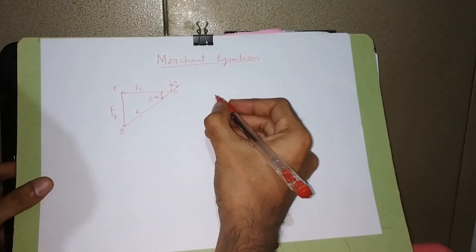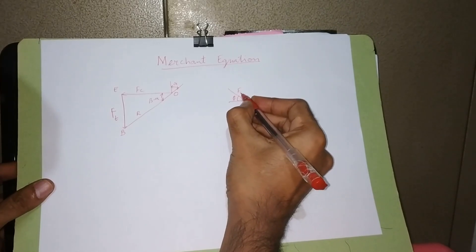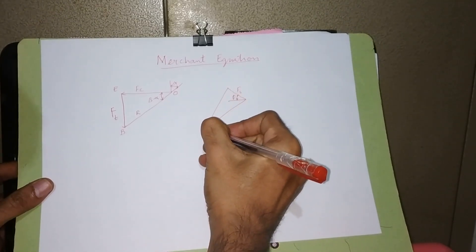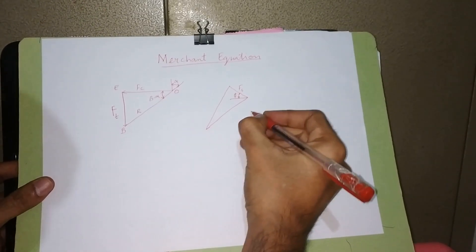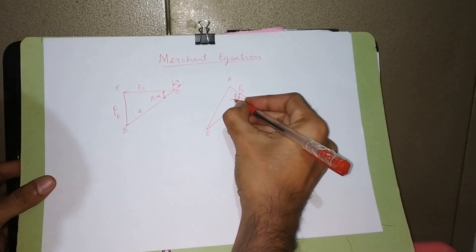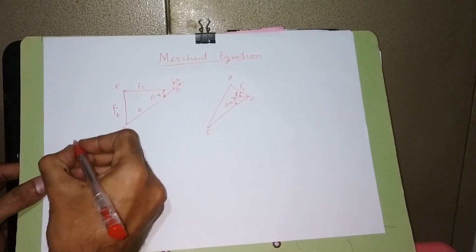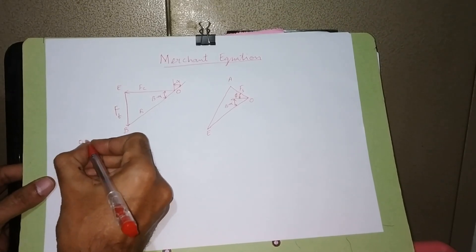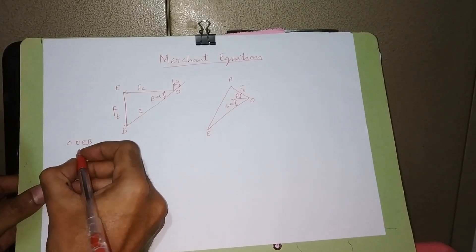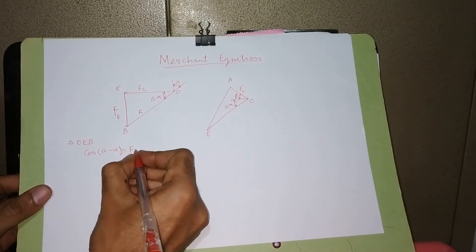We are going to look at another triangle. This is the shear plane and this is the shear force. Let us name the triangle O, E, B. In triangle OEB, this angle is nothing but beta minus alpha.